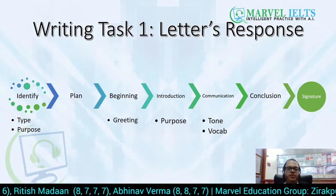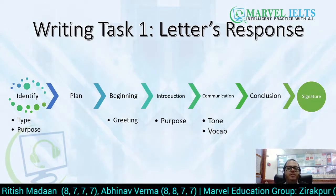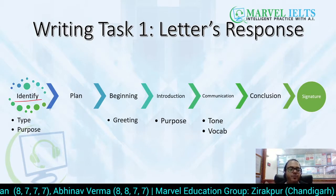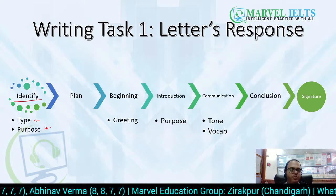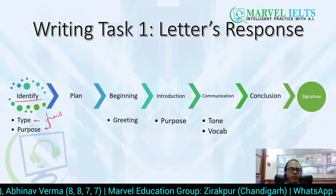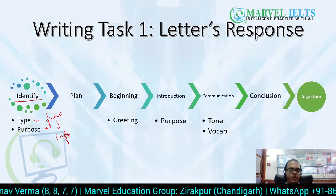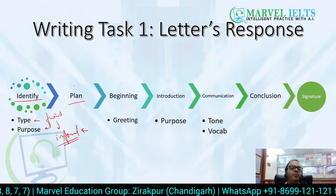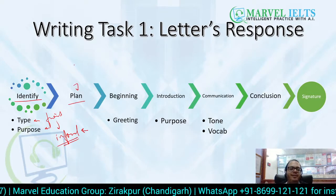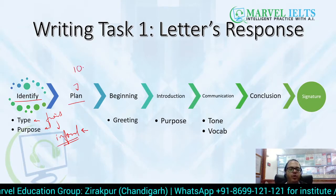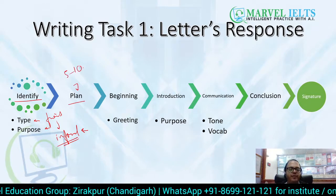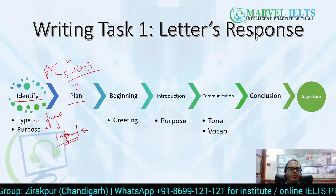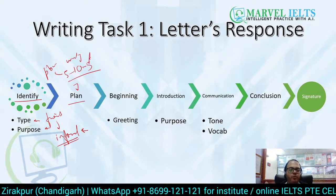So the first thing you have to do is identify your tone, type, and purpose. Since you are writing to a friend, you know it is going to be informal. Then you have to plan your letter. We follow a rule of 5-10-5: five minutes for planning, ten minutes for writing, and five minutes for proofreading.